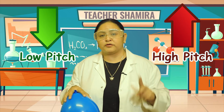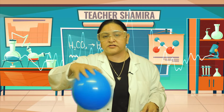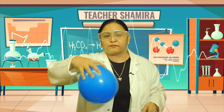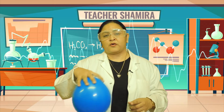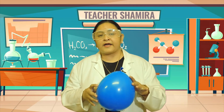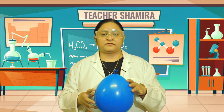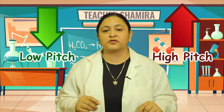So if we move our balloon slower, the pitch goes lower. This is how high pitch and low pitch are produced. When an object or the balloon vibrates fast, you produce a higher pitch. When you move your balloon slower, you produce a lower pitch. This is how high and low pitch are produced.